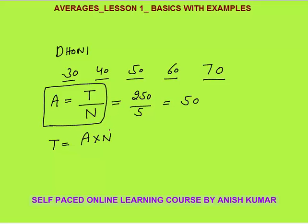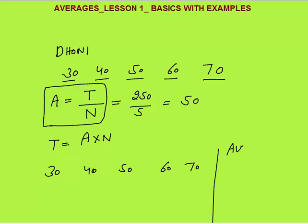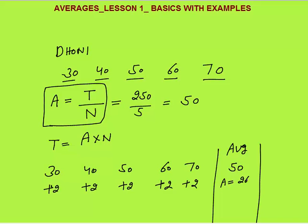Now let's say he scored 30, 40, 50, 60, 70 runs in five innings and the average is 50 — that is 250 by 5. Now if he could have scored two runs extra in each of the innings, or we can say each number is increased by 2, what will be the impact on average? The total will increase by 10, total will now be 260, and average would be 260 by 5, that is 52. So average will also increase by 2.